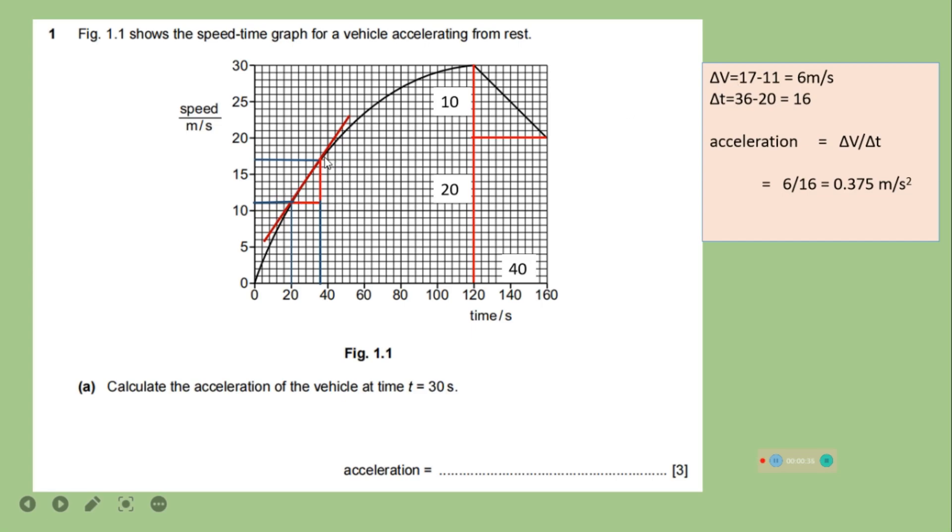Delta v is here. If we have taken this gradient, the change in speed will be 17 minus 11. This value is 17 and this is 11 here on the speed axis. So delta v is 6 meters per second and delta t, change in time, is 36 minus 20, which is 16. So acceleration is rate of change of speed, delta v by delta t. It is 6 by 16, 0.375 or approximate value 0.38 meters per second squared.